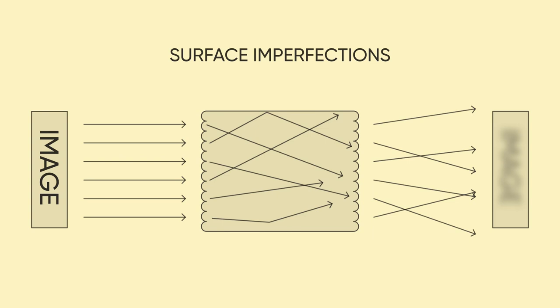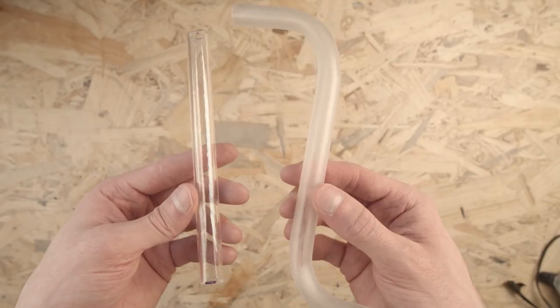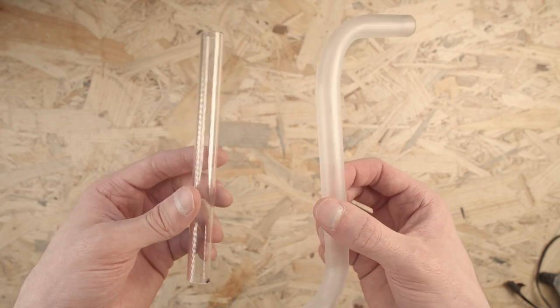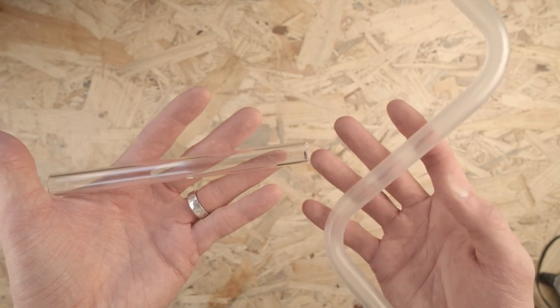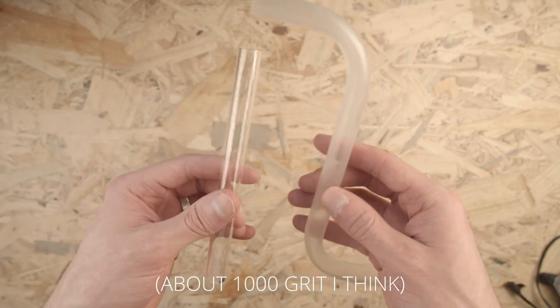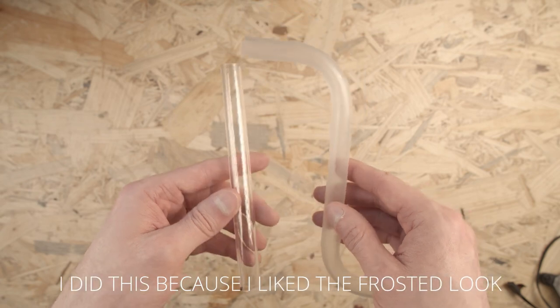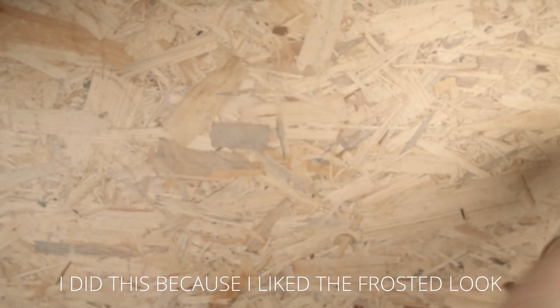If it does, it becomes translucent, not transparent. These two pieces of PETG tubing are identical, apart from the fact that one of them has been wet sanded with a fine grit sandpaper. The outer surface now scatters light as it passes through, making it translucent.